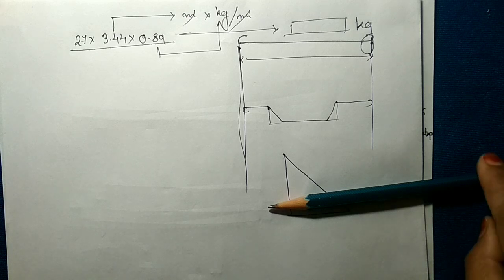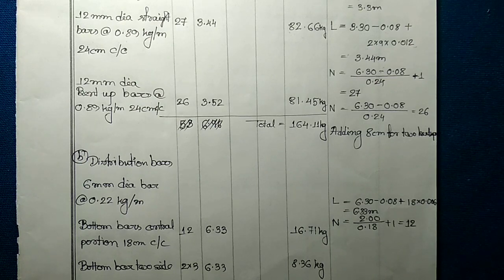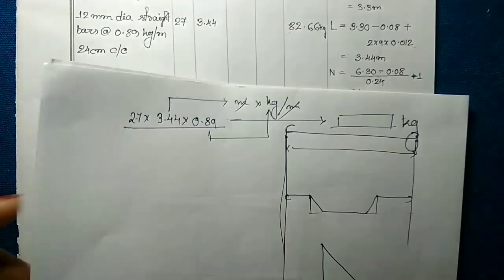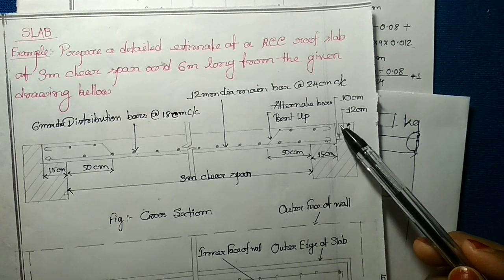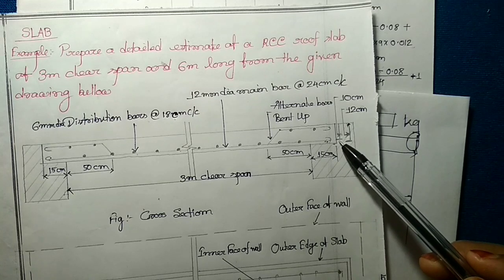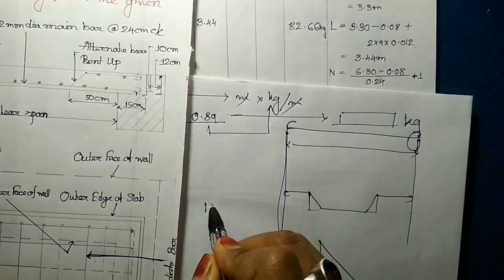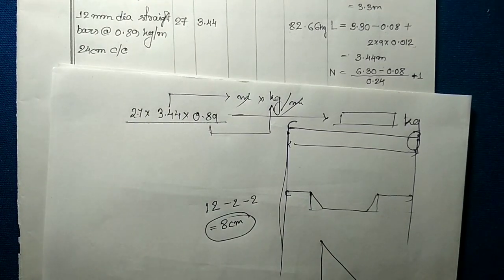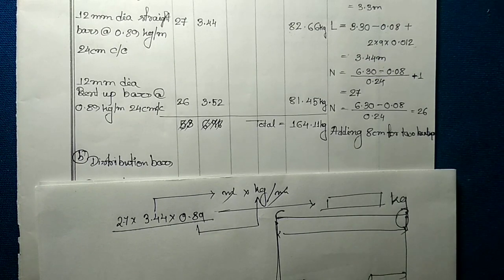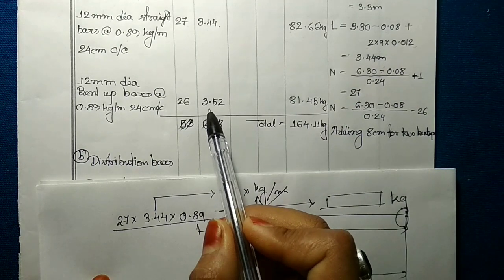From calculation, the additional length is 0.08 meters, or you can simply add one depth as the additional length. The total depth of the slab is 12cm, but after placing the reinforcement with 2cm cover at top and bottom, the effective depth is 12 − 2 − 2 = 8cm. So we add one depth as additional length: 3.44m + 0.08m = 3.52 meters for the bent up bar.